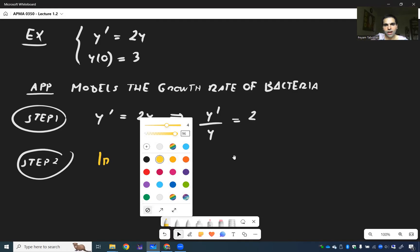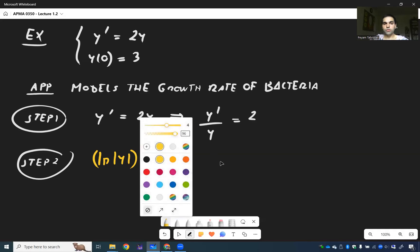So ln of y prime equals 2. Except remember, for 1 over x, we need to put ln of absolute value. So here, in fact, we get ln of absolute value of y prime equals 2.